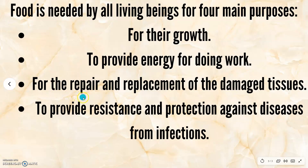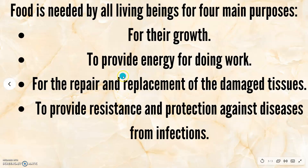The third group is vitamins, minerals, water, and roughage. Water is, as you know, very important — we cannot live without water. Whenever we need water, our body gives us a message by making our throat thirsty. Roughage is basically salad, which helps us to absorb all the nutrients from our food. And vitamins and minerals, which we basically get in vegetables and fruits, help us very much to provide resistance and protection against diseases from infections.